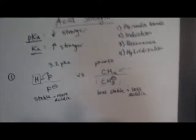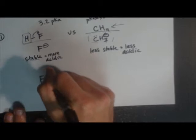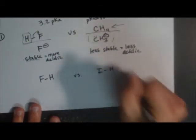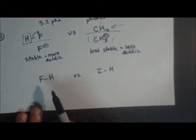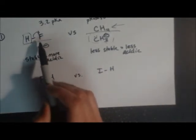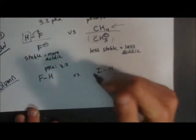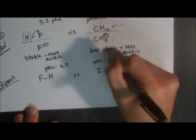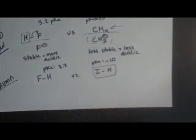Now let's look at going down a column. Instead of fluorine versus carbon, let's do fluorine versus iodine. That's a good example. Which of these is going to be the stronger acid? In my example across a row, fluorine is the more electronegative, meaning it's going to want the electrons more than carbon will. But that only works across a row. Now that we're talking about down a column, which is going to be the stronger acid? The pKa for fluorine is 3.2; the pKa for iodine is negative 10. Iodine is, by far, the stronger acid.